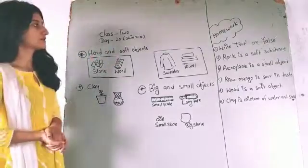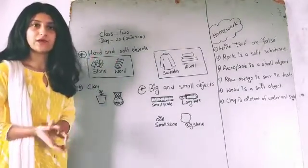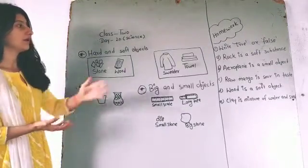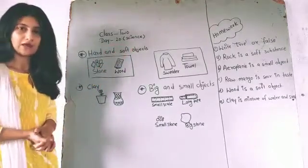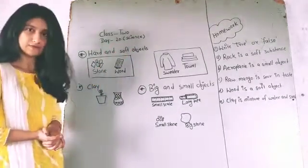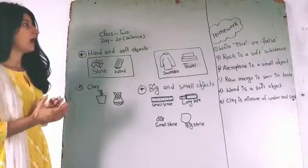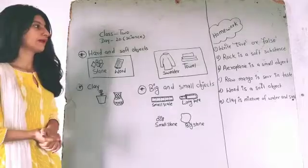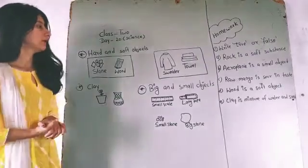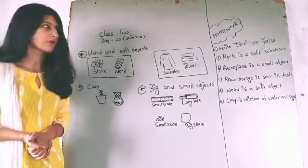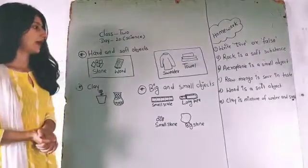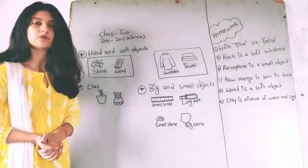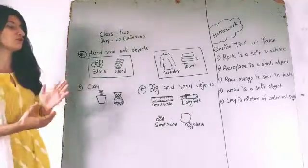So your homework is like this — write T for true and F for false for the given statements. A: Rock is a soft substance. B: Iron is a small object. C: Raw mango is sour. D: Wood is a soft object. And the last one: clay is a mixture of water and soil.